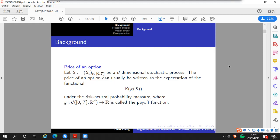In mathematical finance, there is a problem of option pricing, i.e., how to calculate the price of an option efficiently. Let S be a d-dimensional stochastic process. The price of option can usually be written as the expectation of the functional under the risk-neutral probability measure, in which g is usually called the payoff function.